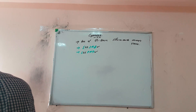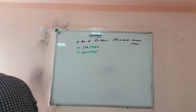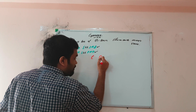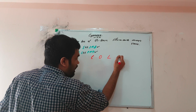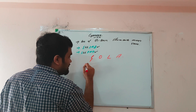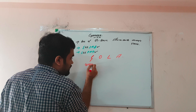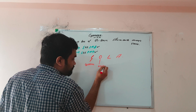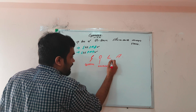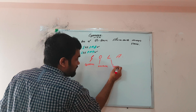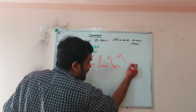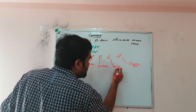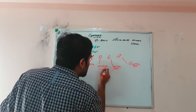To remember the dibasic amino acids, use the mnemonic COLA — like Coca-Cola. C is for cystine, O is for ornithine, L is for lysine, and A is for arginine. These are the dibasic amino acids affected in cystinuria.